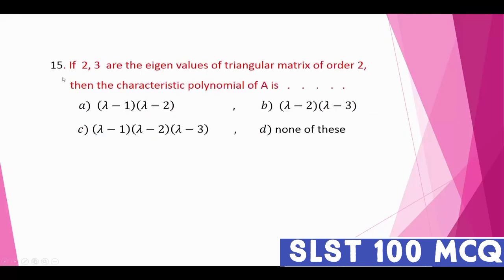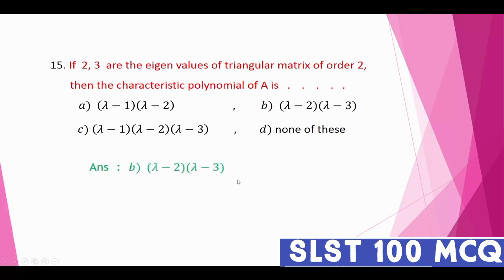Question fifteen: if 2 and 3 are eigenvalues of a triangular matrix of order two, then the characteristic polynomial of A is (λ − 2)(λ − 3). Option B is correct.